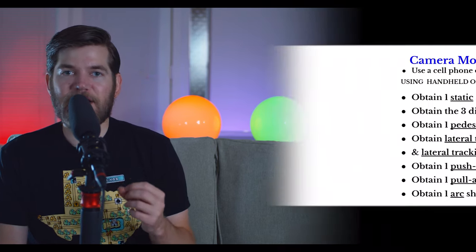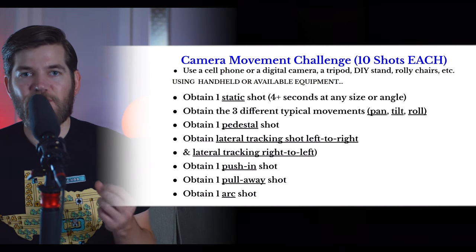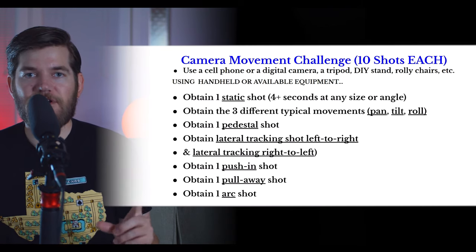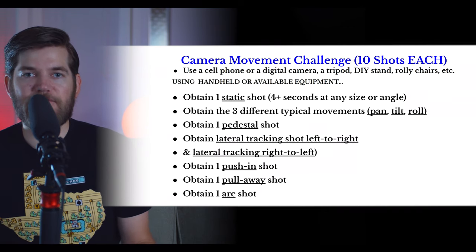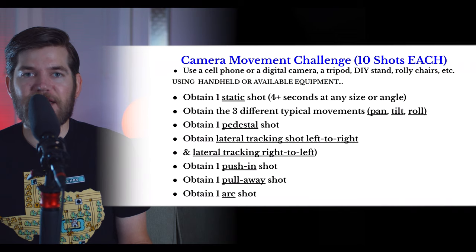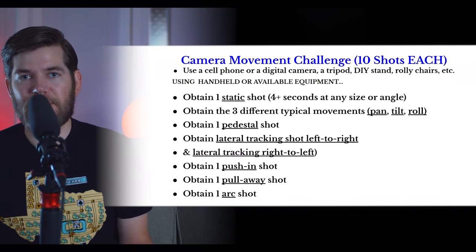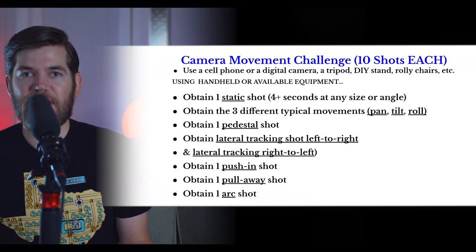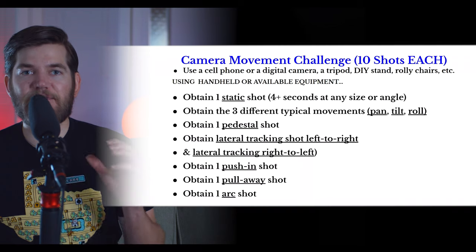Now that we've gone over the different methods of camera movement, I want you to try these on your own. If you're a student in my class, I have a specific list of camera movements I want you to achieve, along with recommendations for how to do so on a low budget with only a cell phone. For example, to achieve a static shot on a cell phone, use some kind of phone stand. If you don't have one, you can make your own — there are many guides online ranging from styrofoam cups to paper towel rolls to cardboard.